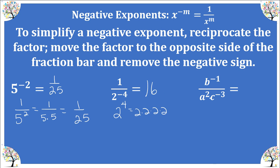In this example, we have no values so we're simply removing all negative exponents. To remove a negative exponent, move that factor to its opposite location. Going through each factor: b to the negative 1 is in the numerator, so we move it to the denominator and make it positive 1. Then a squared in the denominator has a positive exponent — it's happy and stays in the denominator. c to the negative 3 is in the denominator and unhappy, so we move it to the numerator and remove the negative sign.